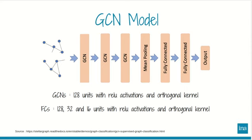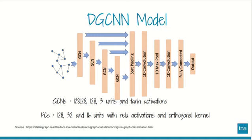Our aim is to do graph classification with GSN, so a global mean pooling layer is added after the GSN layers at the end. For the DGCNN model, this uses graph convolutional layers and proposes sort pooling, which sorts nodes according to their structural roles within the graph. For both of them, the StellarGraph library is used for the implementation.